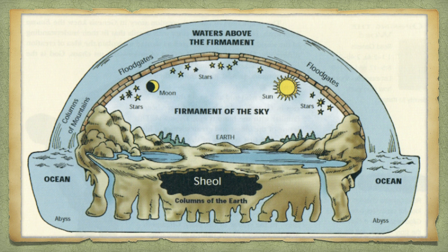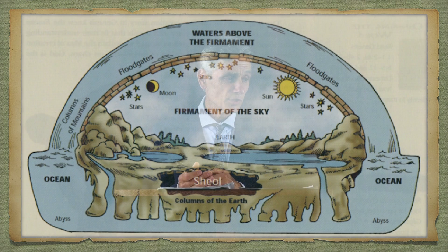Genesis chapter 1 today cannot be accepted as it reads by those who believe in the spinning globe, because that picture makes it impossible for the earth to be orbiting the sun. Therefore they have to spiritualize or totally reject what Genesis 1 says literally. But scripture plainly teaches: the firmament is solid, it separates the waters above from beneath, stretched out as a tent over the earth. The sun, moon, and stars are within the firmament, not outside of it — exactly as Psalm 19 says.